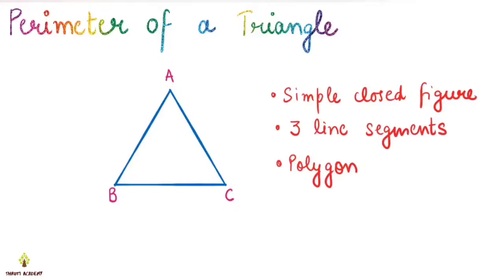Now we have talked about triangle. Now we will talk about what is the perimeter. The perimeter of any figure is the distance around the figure.